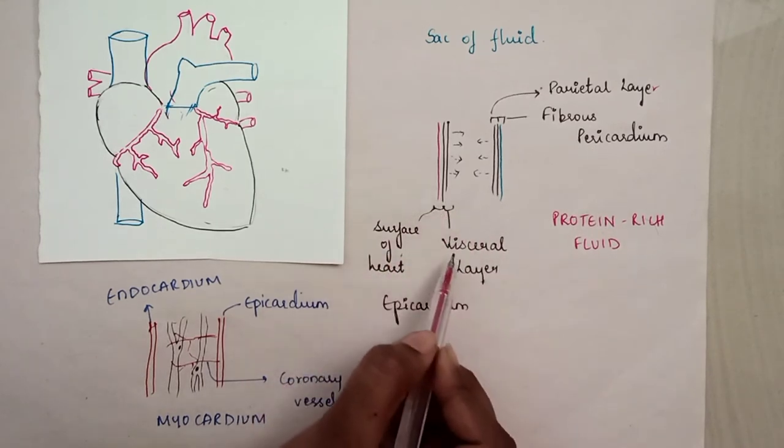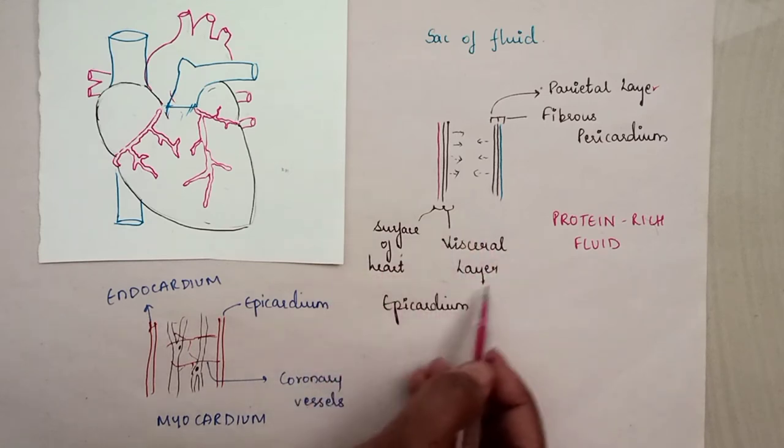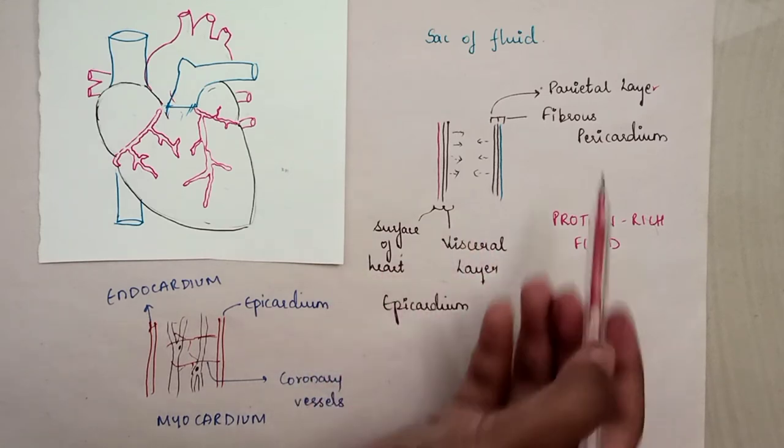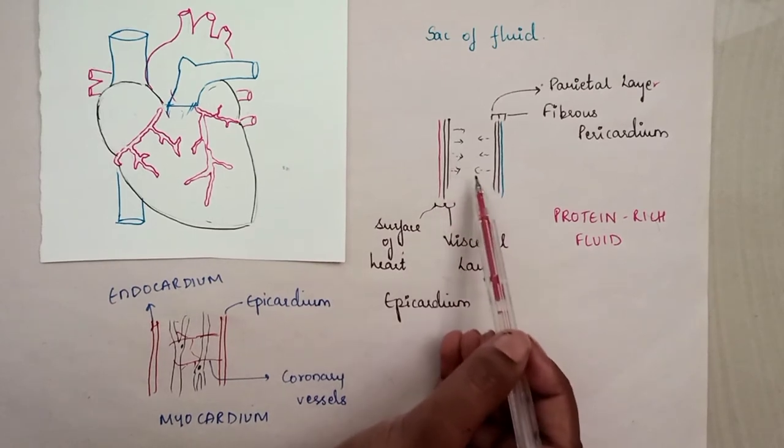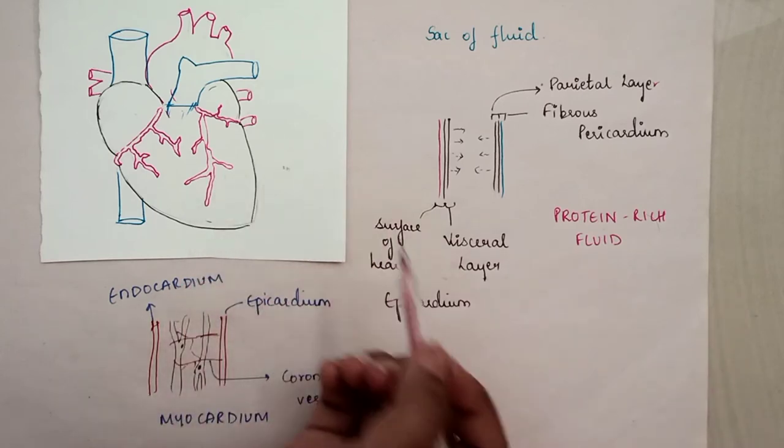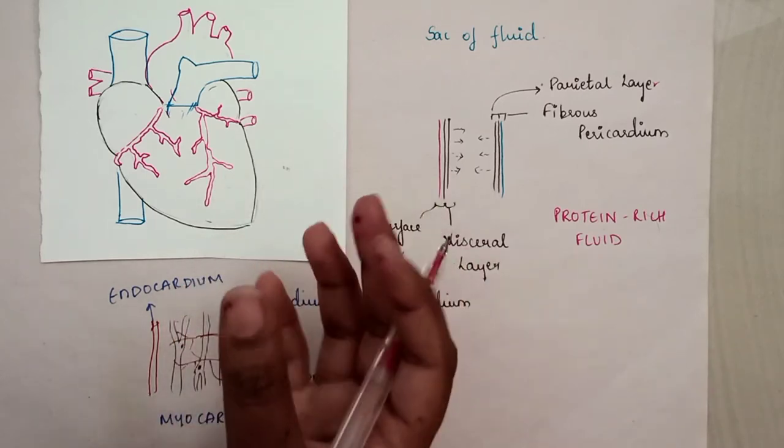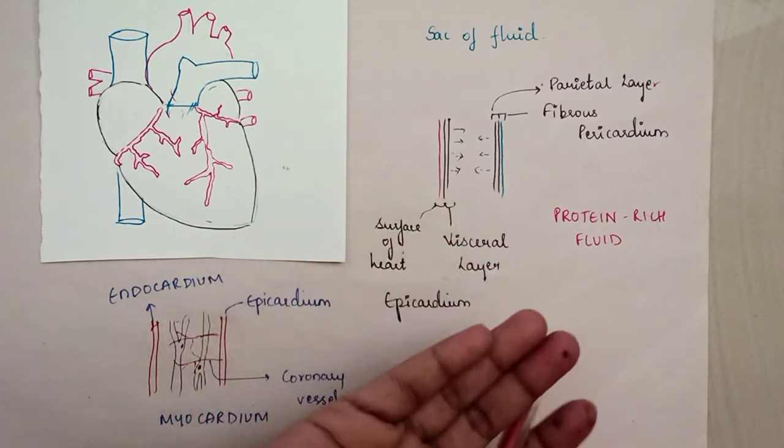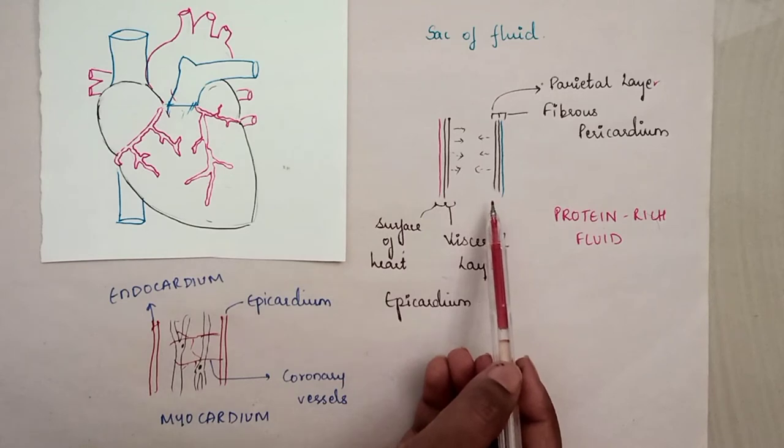The inner visceral layer is attached to the heart surface, forming the epicardium. Both layers secrete a protein-rich fluid that acts as a lubricant, allowing the heart to move while pumping blood and avoiding friction.